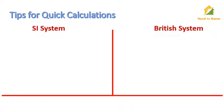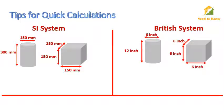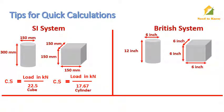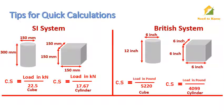Finally, I provide some tips for quick calculations. These are the standard sizes mostly used to determine compressive strength of concrete. In SI system, for cube crushing, divide the load in kilonewton directly by the factor 22.5 to get compressive strength in megapascal. For cylinder crushing, divide the load in kilonewton directly by the factor 17.67 to get compressive strength in megapascal. In the British system, for cube crushing, divide the load in pounds by the factor 5220 to get compressive strength in megapascal. For cylinder crushing, divide the load in pounds by the factor 4099 to get compressive strength in megapascal.